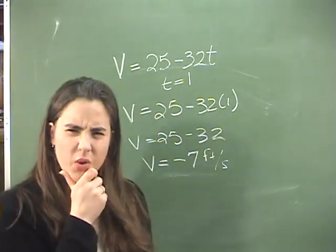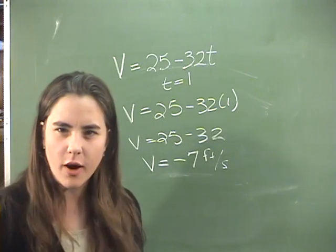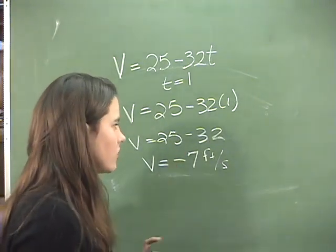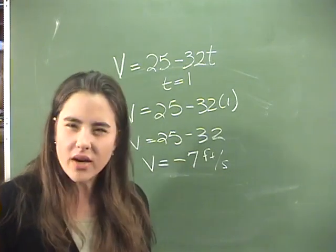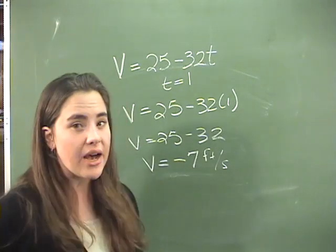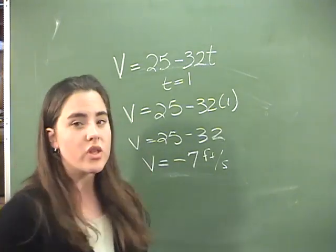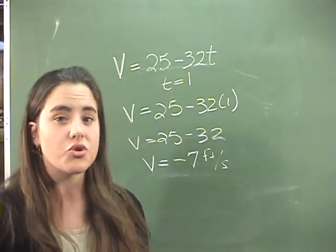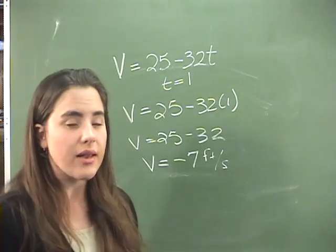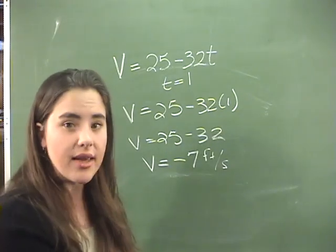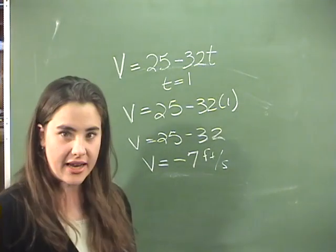Now what are we supposed to think about that? Did I do the problem wrong? Well, no, 25 minus 32 is minus 7. So what is that minus sign trying to tell us? Turns out, since velocity measures more than just speed, it also measures direction, the minus sign is letting you know that after one second, the shot put ball is falling back down to the ground at 7 feet per second.